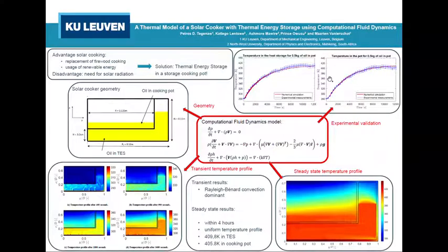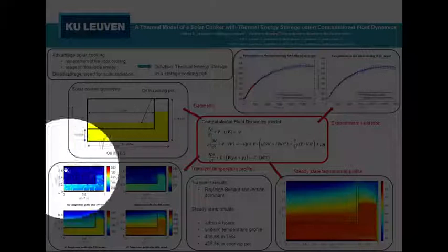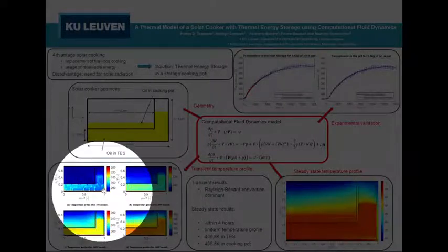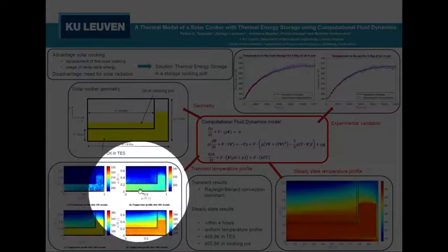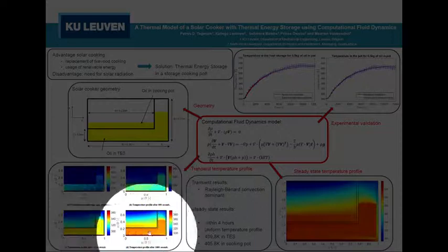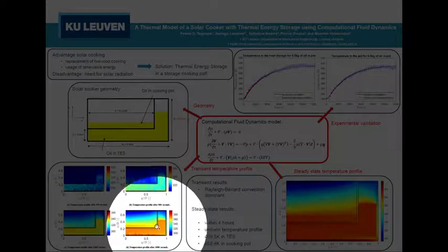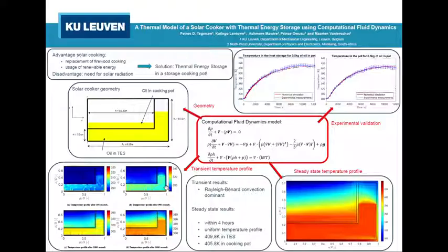And then we used the numerical model to do a study on the physics of the heat transfer phenomena. And this is shown here. What you see here is a different time instance. So here at 450 seconds, at 900, at 1800 and at 3600 seconds, the temperature profile within the cooker.